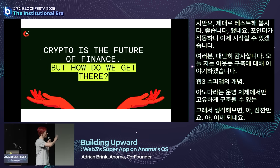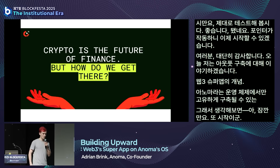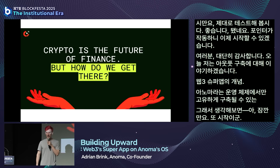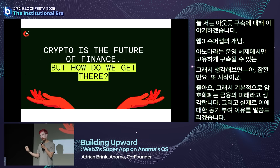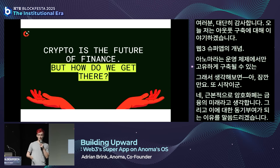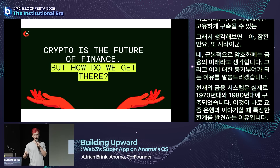Crypto fundamentally is the future of finance. The current financial system was really built in the seventies and eighties, which is why when you talk to banks nowadays they will tell you things like their entire system runs in Java 6 or sometimes still in COBOL mainframes.